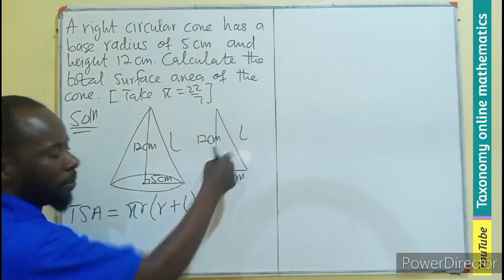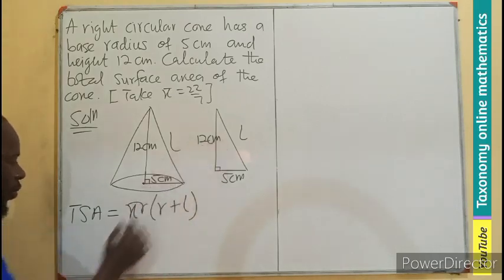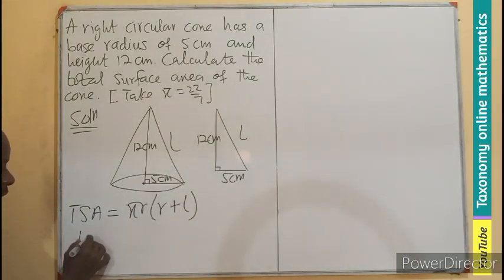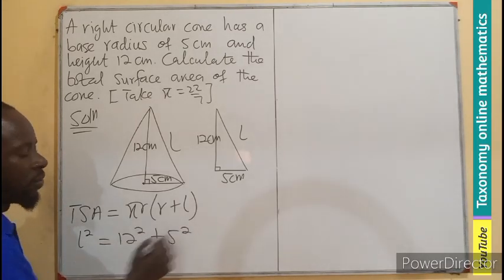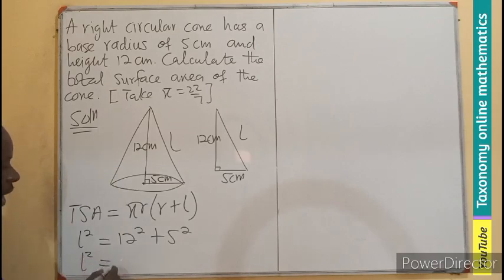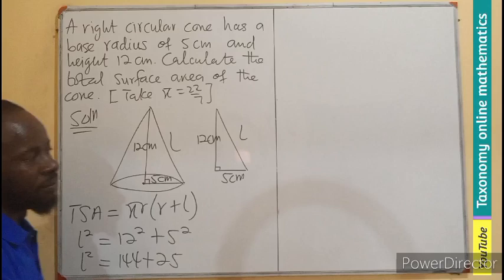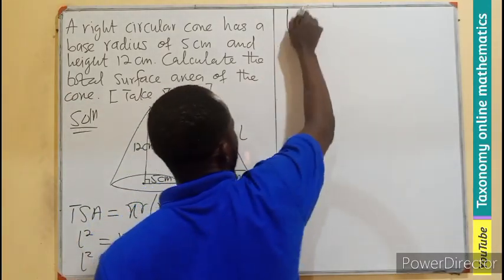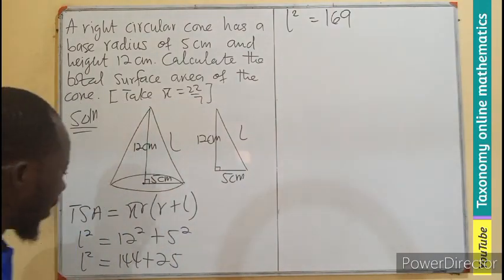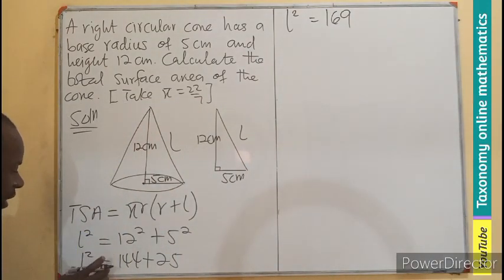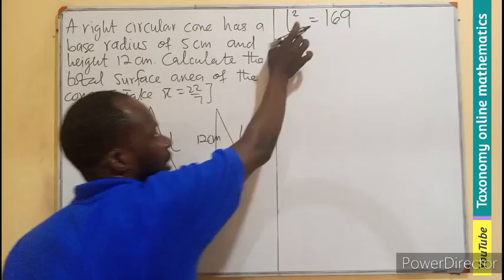So finding the L will not be a problem. So from here, we can say that L squared equals 12 squared plus 5 squared. Where L will still be squared, 144, then 25. Meaning, your L squared will be 169 centimeters.